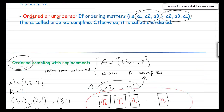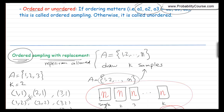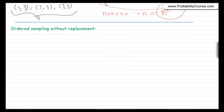Last time we talked about ordered sampling with replacement. Now I want to talk about ordered sampling without replacement. It means I have a set A with some number of elements — let's say three — and I want to choose a sample of size k, say k equals 2. It's ordered, so (1,2) is different from (2,1). It's also without replacement, meaning if I pick an element, I don't put it back, so I cannot choose the same element twice.